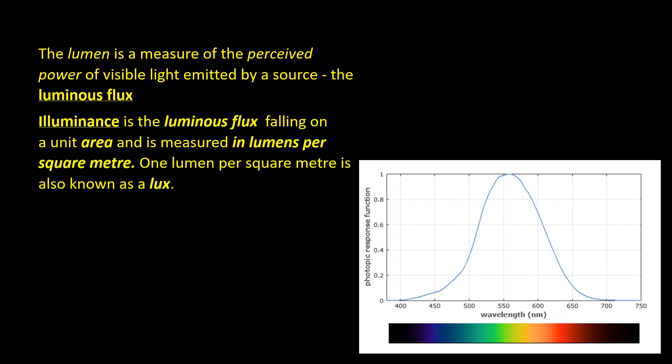The lumen is a measure of the perceived power of visible light emitted by a source. The proper name for this is the luminous flux. The power at different wavelengths is weighted according to a standard model which approximates the human eye's sensitivity. Illuminance is the luminous flux per unit area and is measured in lumens per square meter. One lumen per square meter is also known as a lux.